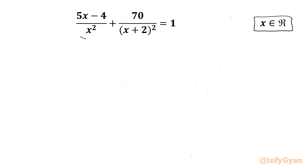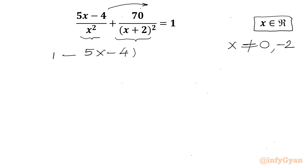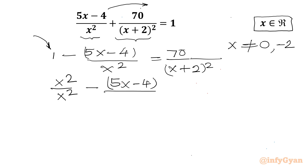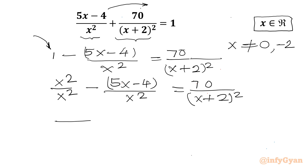Let's get started by noting that our denominators cannot be 0, so x cannot be 0 and x cannot be -2. Now I will take the very first term to the RHS, so I can write 1 - (5x - 4)/x² = 70/(x + 2)². I can write the 1 as x²/x² so that the denominator will be the same, then take x² as the LCM.